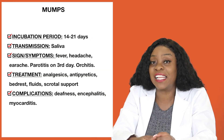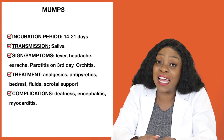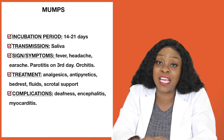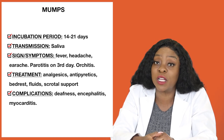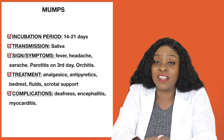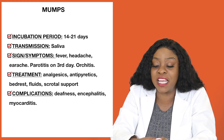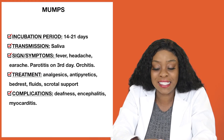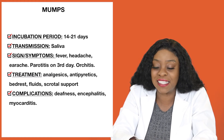Male children can develop orchitis from having mumps. Mumps is treated with analgesics for the pain and antipyretics for the fever. Bed rest helps, along with lots of fluids to prevent dehydration from the fever, and scrotal support if there is any orchitis. Complications of mumps include deafness, encephalitis, myocarditis, and even epididymitis or orchitis. Very intense complications can even cause problems with the heart.